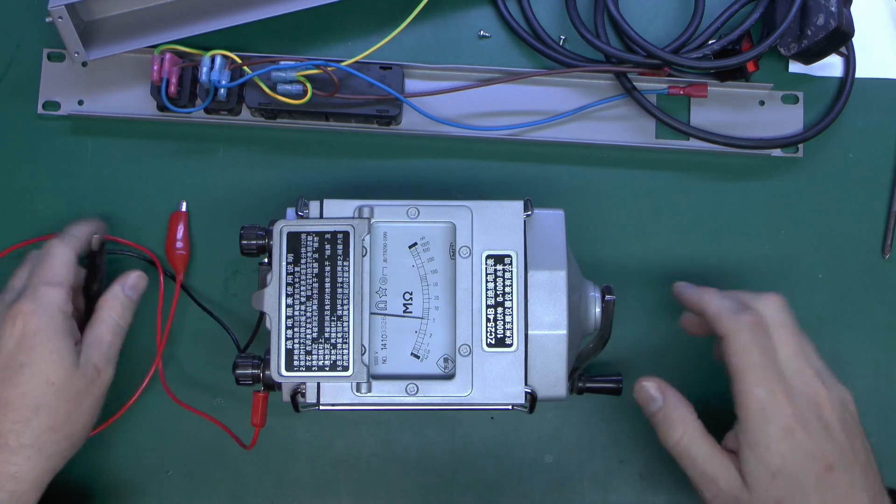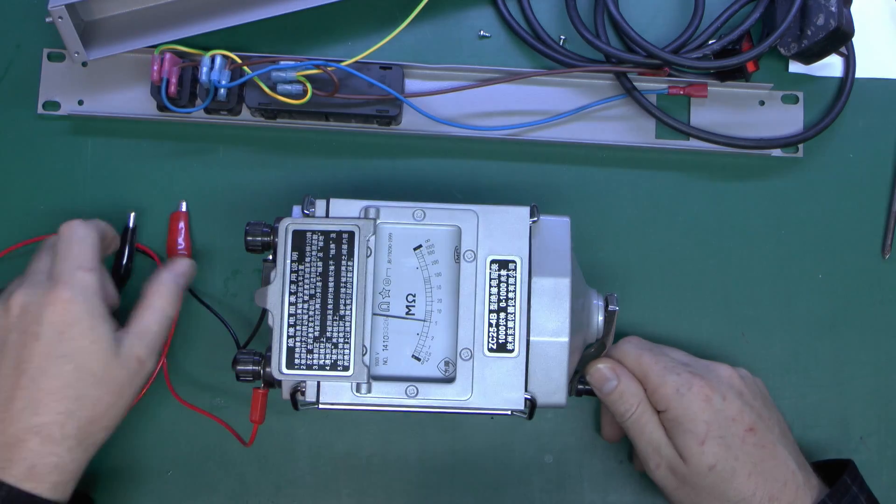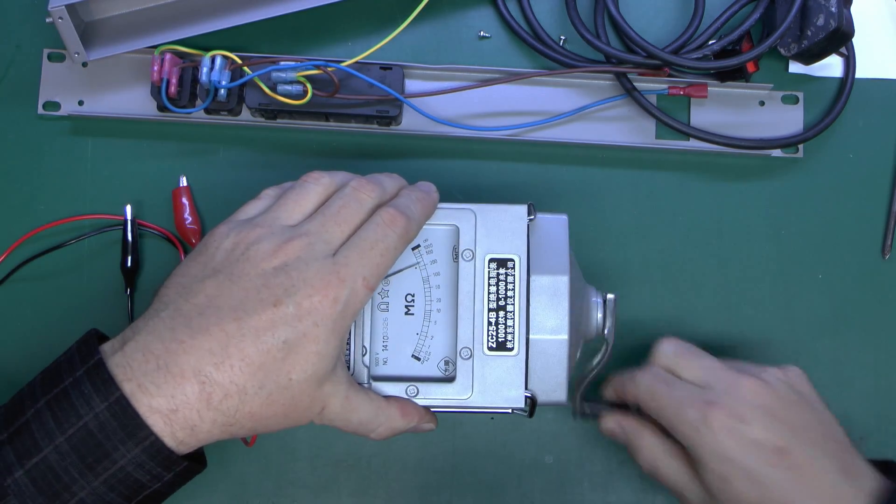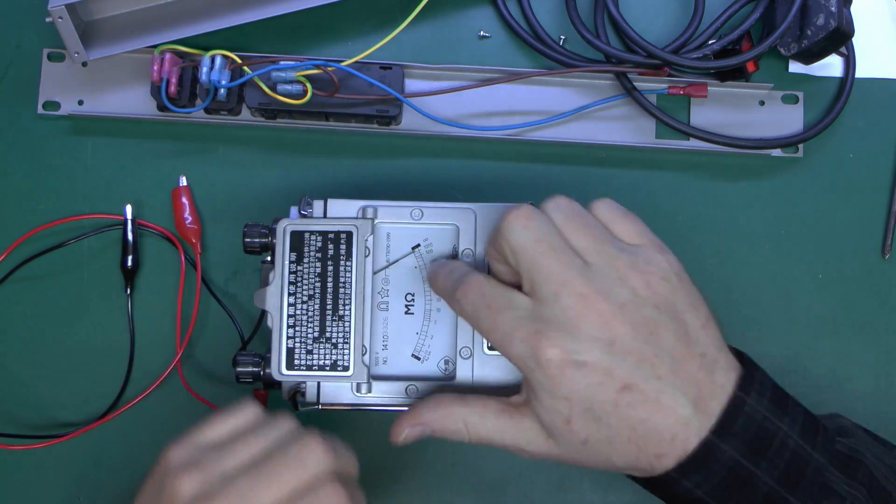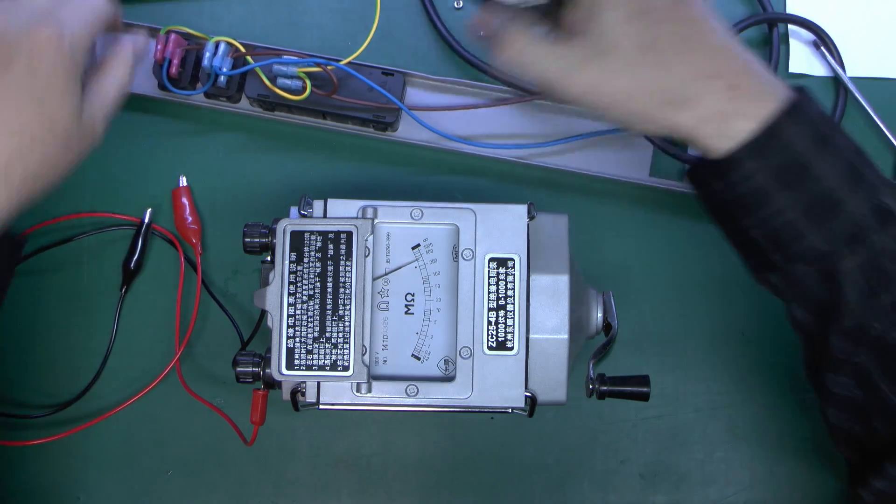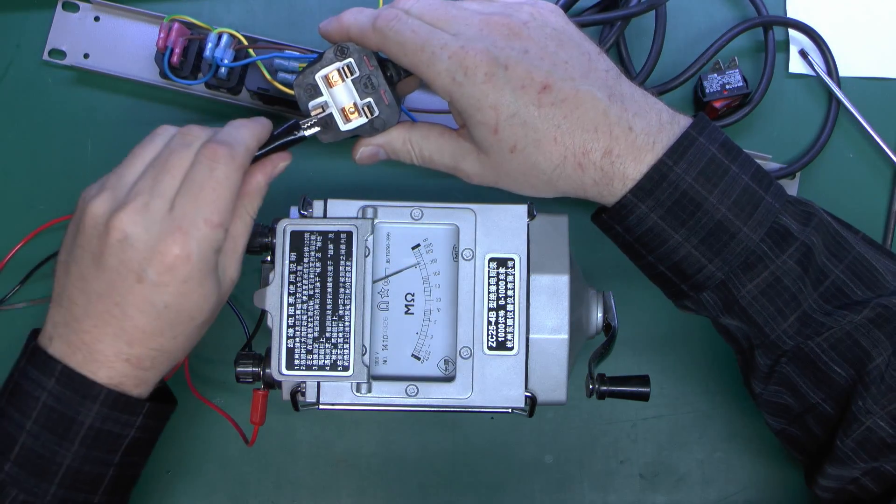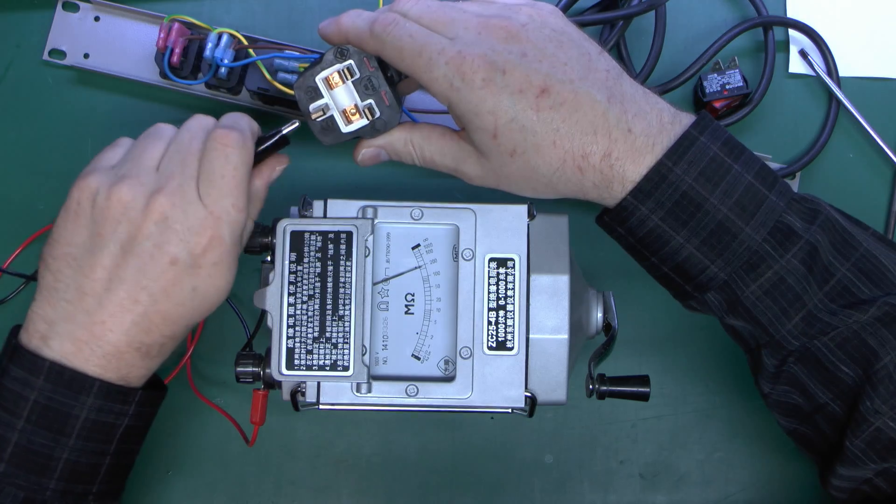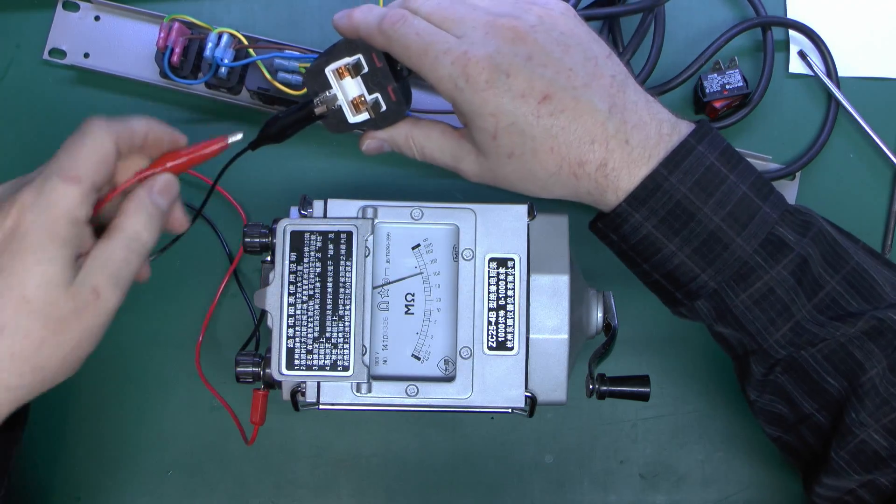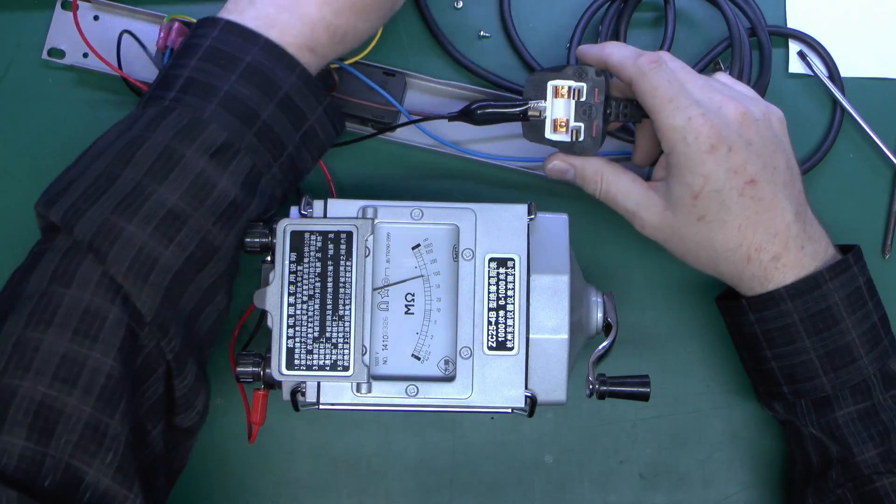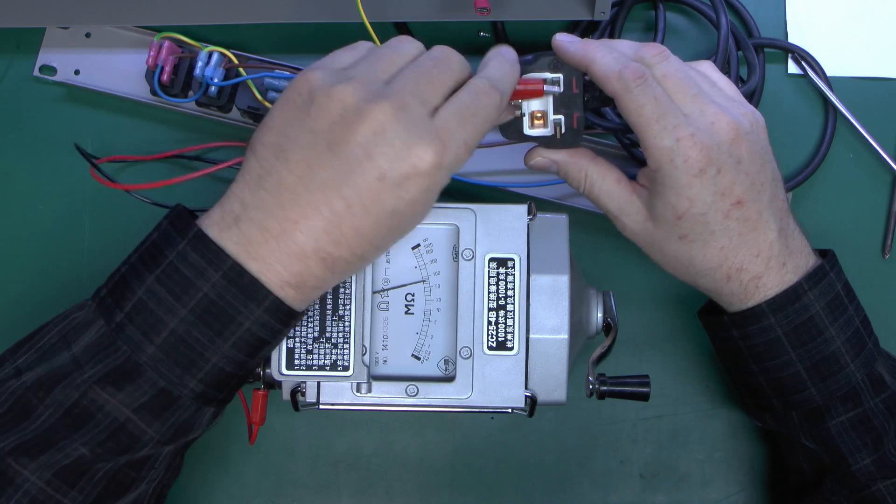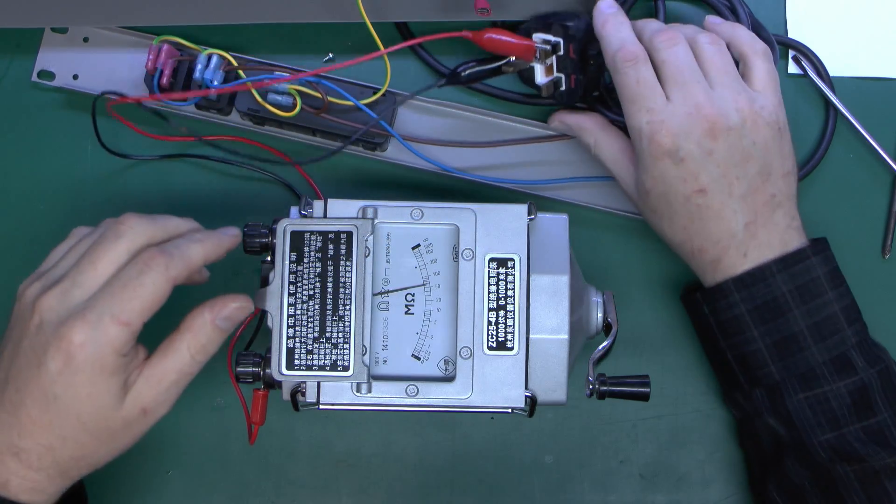So if we turn the handle with the thing just open at the end, and as expected, of course, it goes up to the infinity end there. So let's just connect it to this device here. We'll go between the earth and one of the pins to start with. And we're just testing the length of cord here, still got it disconnected at the end there. So we'll go between that and the neutral to start with and then we should crank the handle.